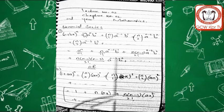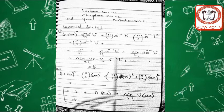नीचे जो x था उसको ऊपर ले गए — जब नीचे से value ऊपर जाती है तो वो अपना sign change करती है. नीचे x था, power 1 थी, ऊपर गया तो power minus 1/2 हो गई. बाकी simplify किया — value क्या बच रही है: minus 1/2 × x की power (minus 1/2 minus 1) = minus 1/2 × x^(-3/2). Power rule से check करें: y = x^(-1/2), dy/dx = minus 1/2 × x^(-3/2). आप अपने answer से compare कर सकते हैं.